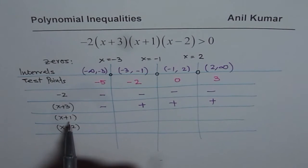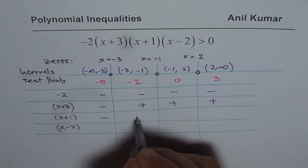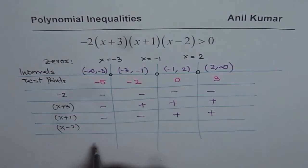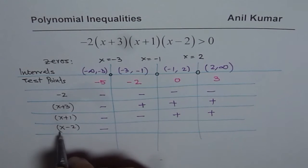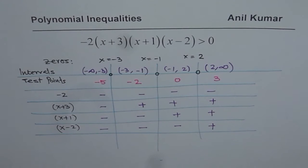x plus 1: substituting minus 5 gives us minus 4, negative sign. Minus 2 plus 1 is also negative. Zero plus 1 is positive. 3 plus 1 is positive. x minus 2: when x is minus 5, negative. When minus 2, negative. For zero, again negative. And then for 3 it is positive. So that is how each factor is within these intervals.